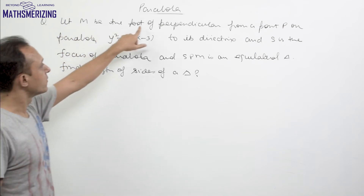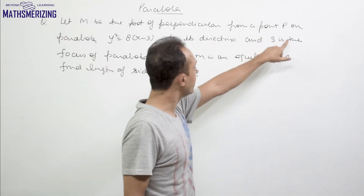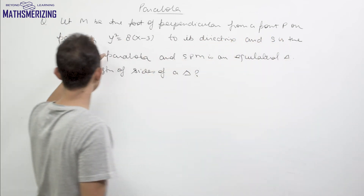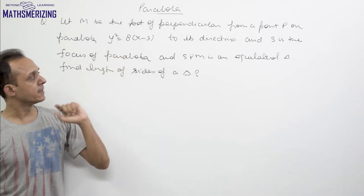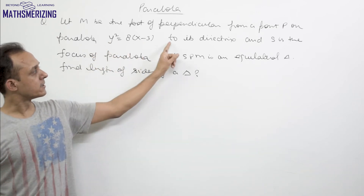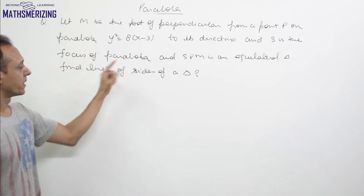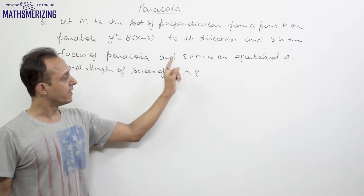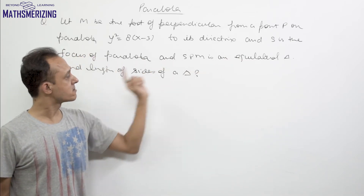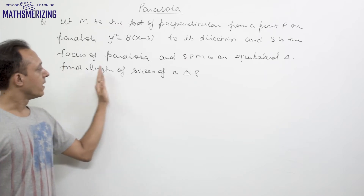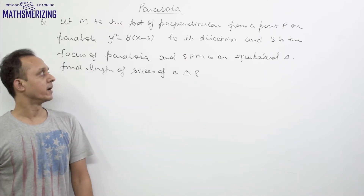Let M be the foot of perpendicular from a point P on parabola y² = 8x − 3 to its directrix, and S is the focus of the parabola. If SPM is an equilateral triangle, we need to find the length of sides of this triangle.